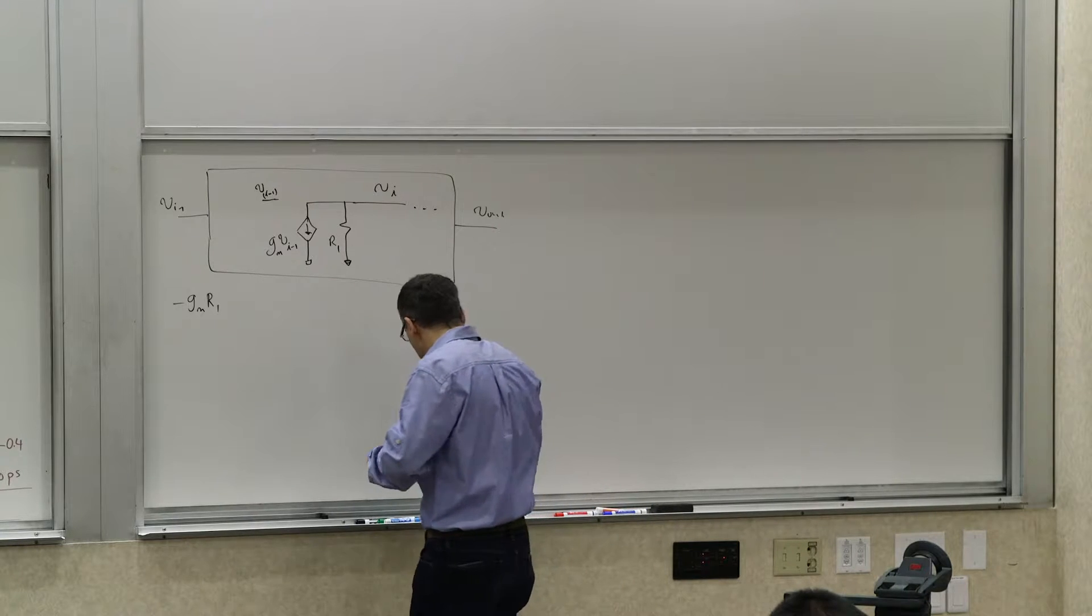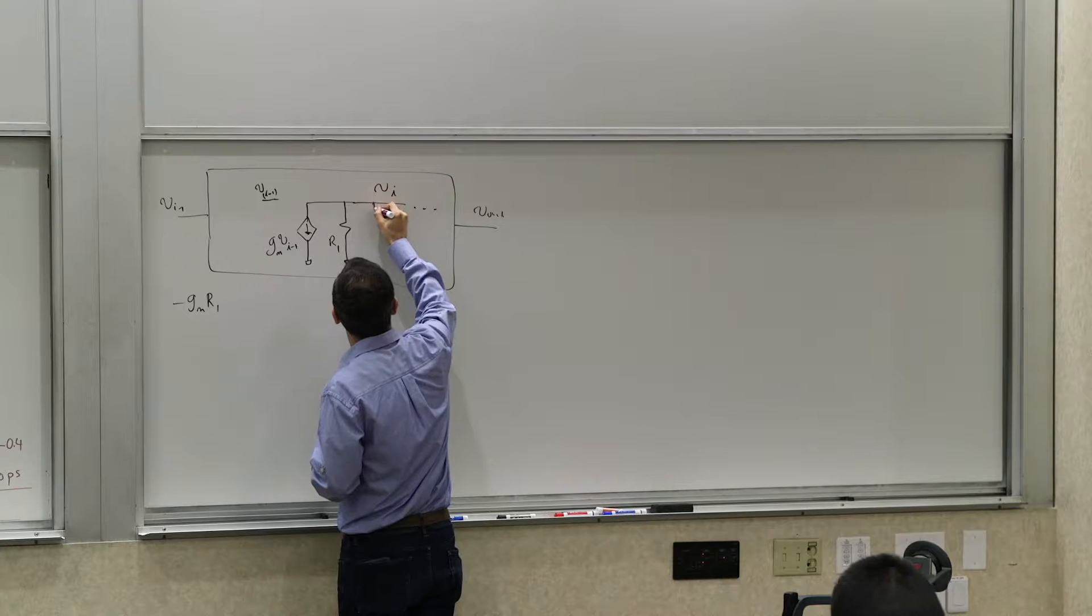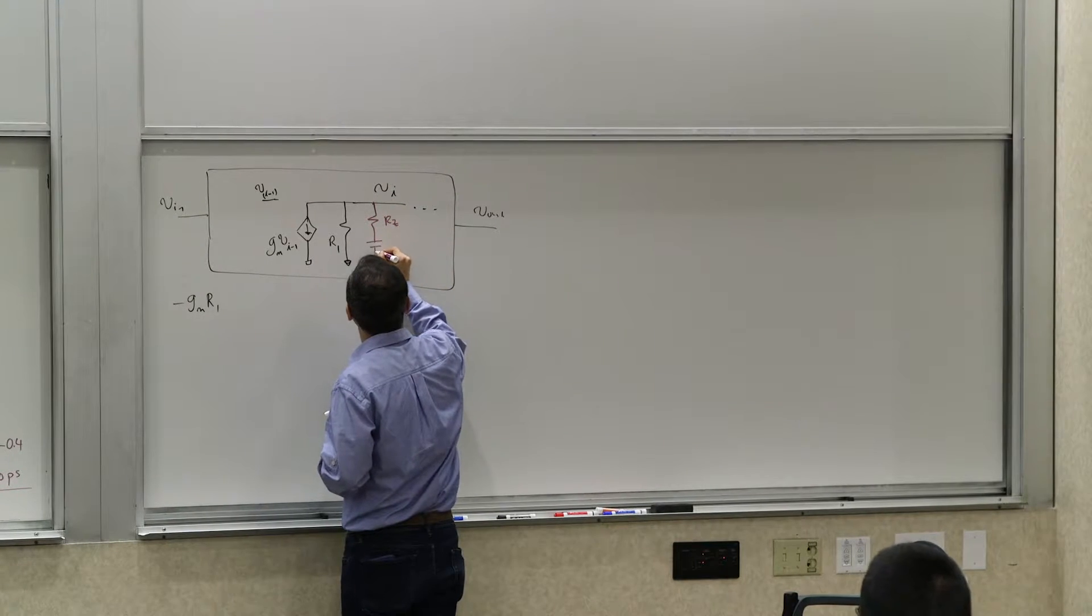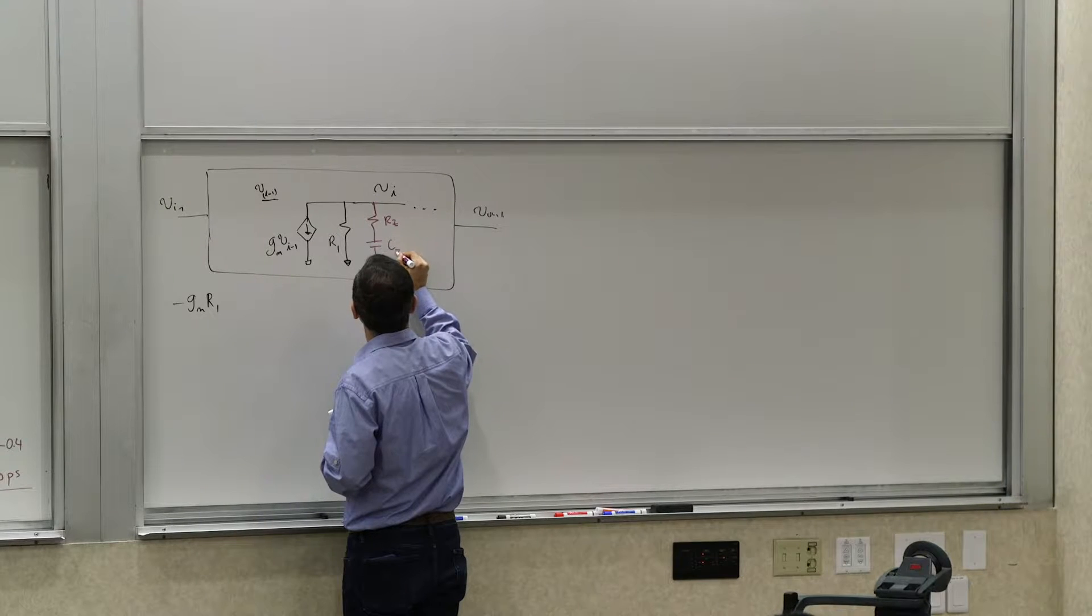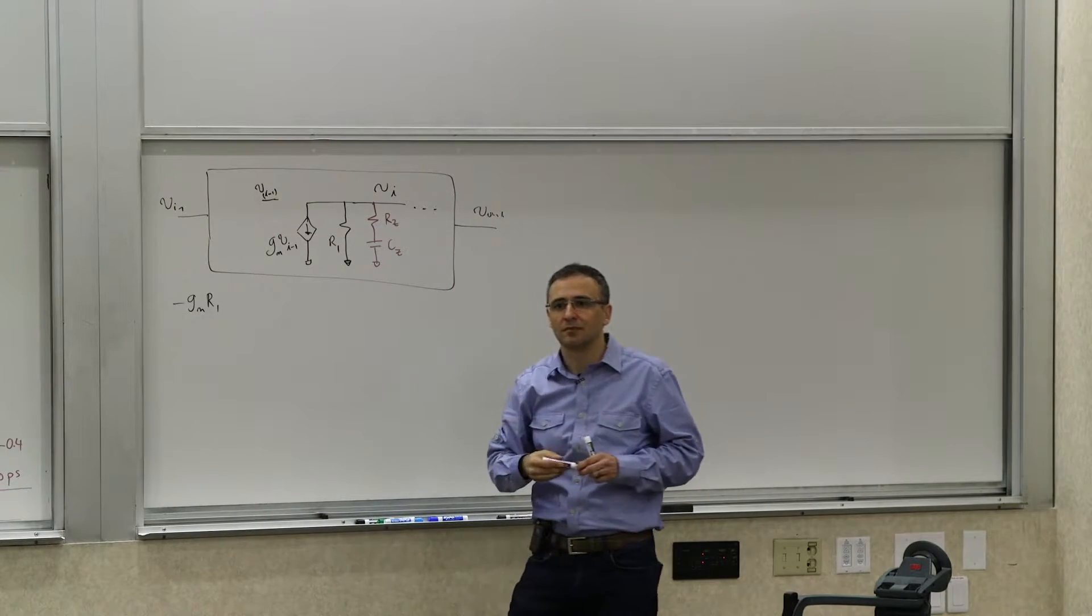So now imagine that I introduce a branch here, an extra branch in parallel with this one. I call it consisting of a resistor Rz and a capacitor Cz, okay?